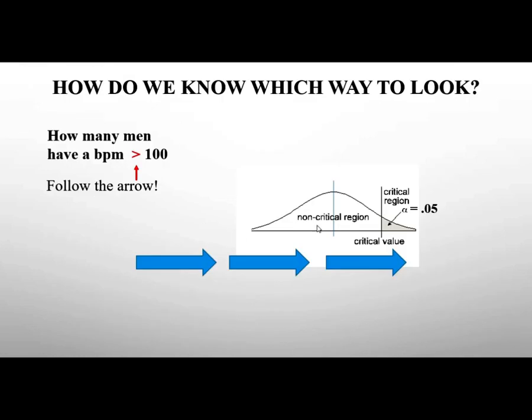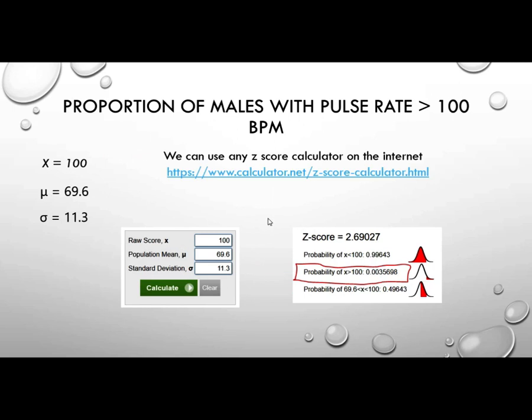So how do we know which way to look? It says how many men have a BPM greater than 100? We're just going to follow the arrow. We're going to go to this direction. We want to know how many men fall in this range, but because of our textbook, it only shows us this, so we have to do 1 minus. Another way we could do it is just use software. I got this from the internet. You can use any z-score calculator on the internet, but you just have to know which way to look. Our score is 100. Our mu is 69.6. Our sigma is 11.3. I plug it in, and then I'm looking. See this little red portion here? We know that we're looking to the right, and there we go, 0.0036.